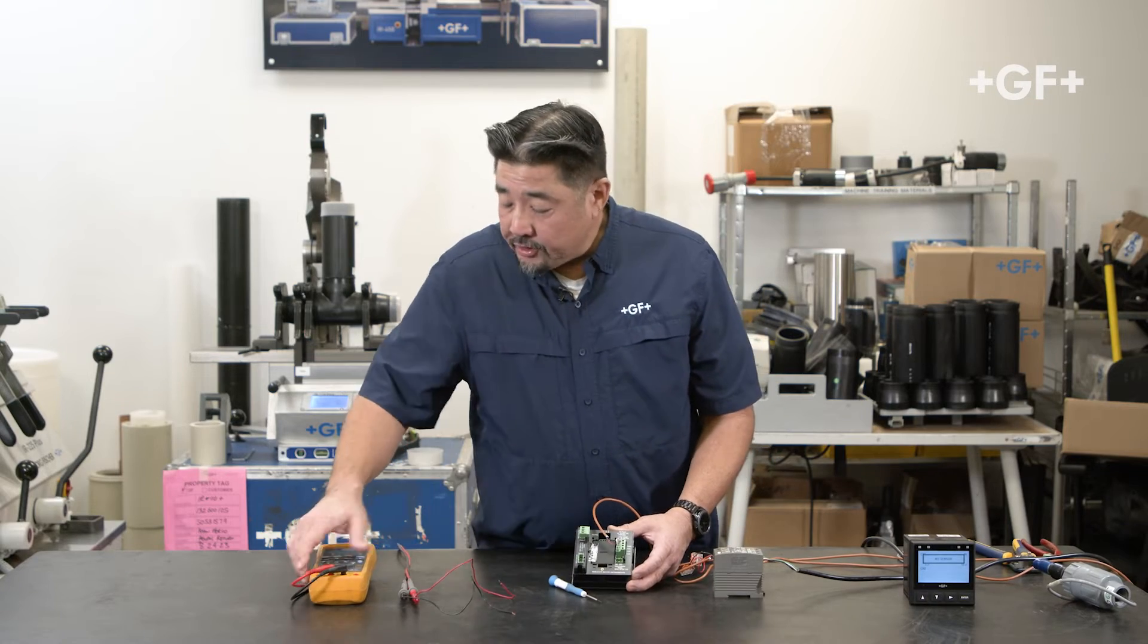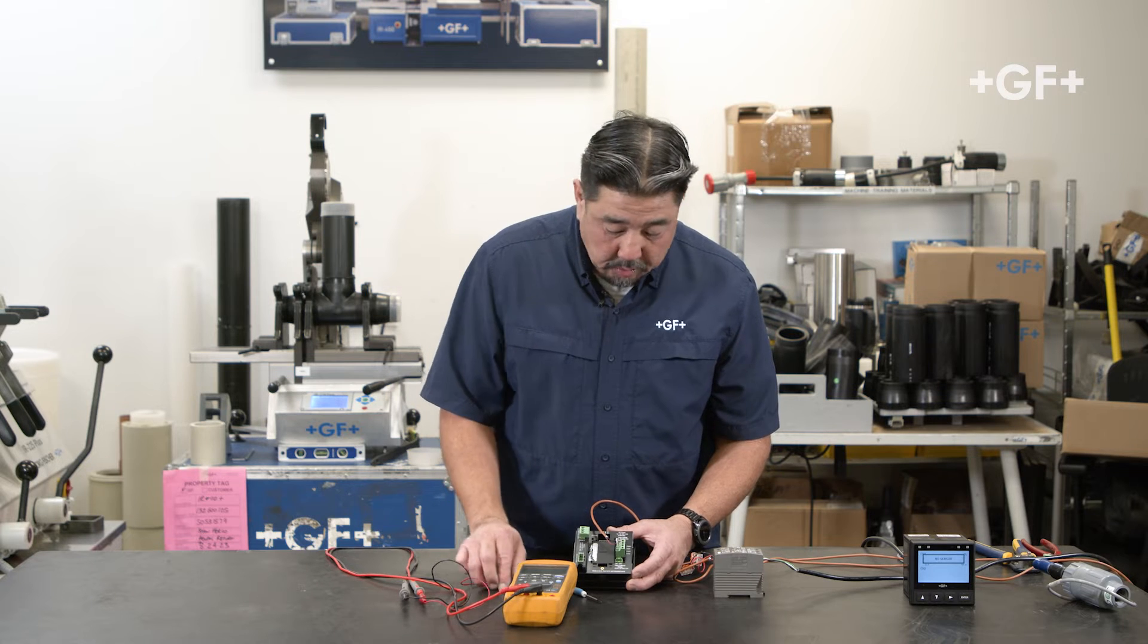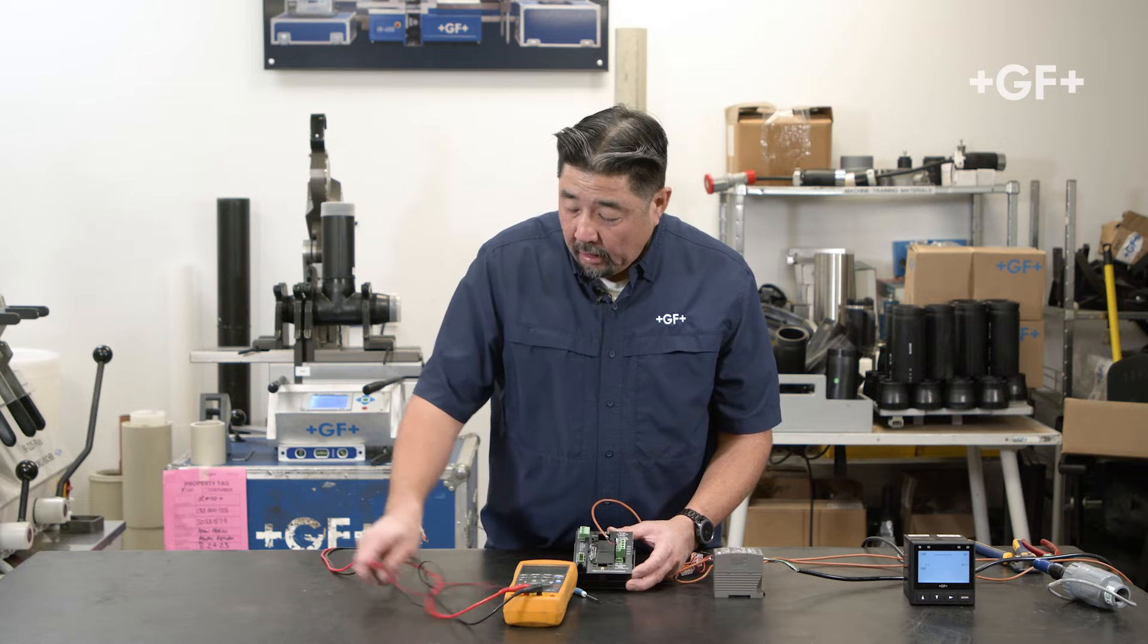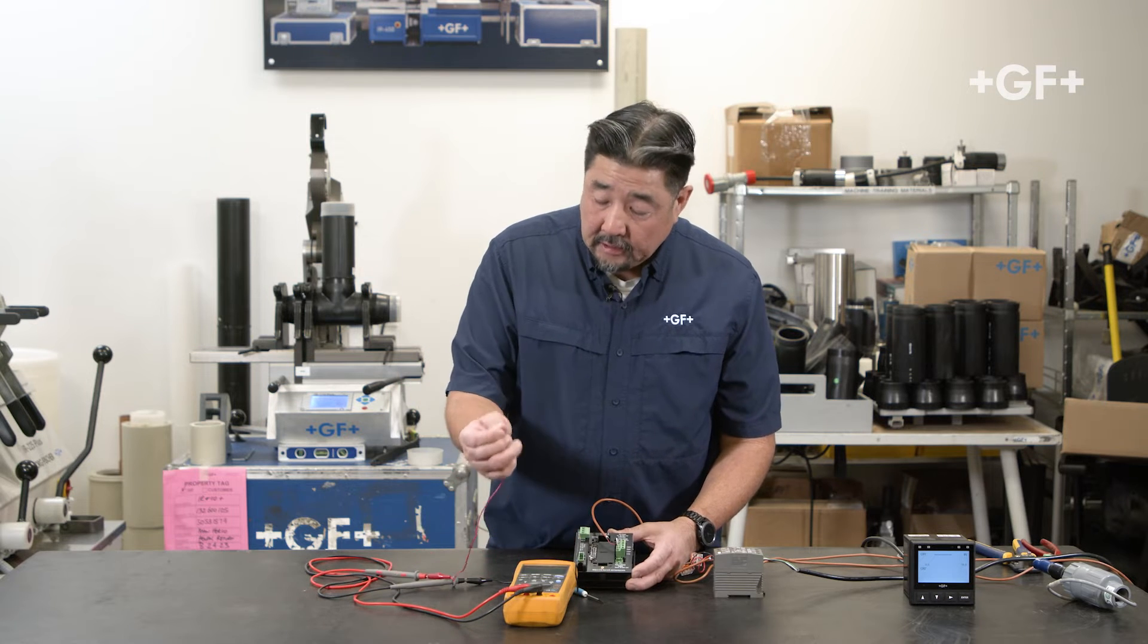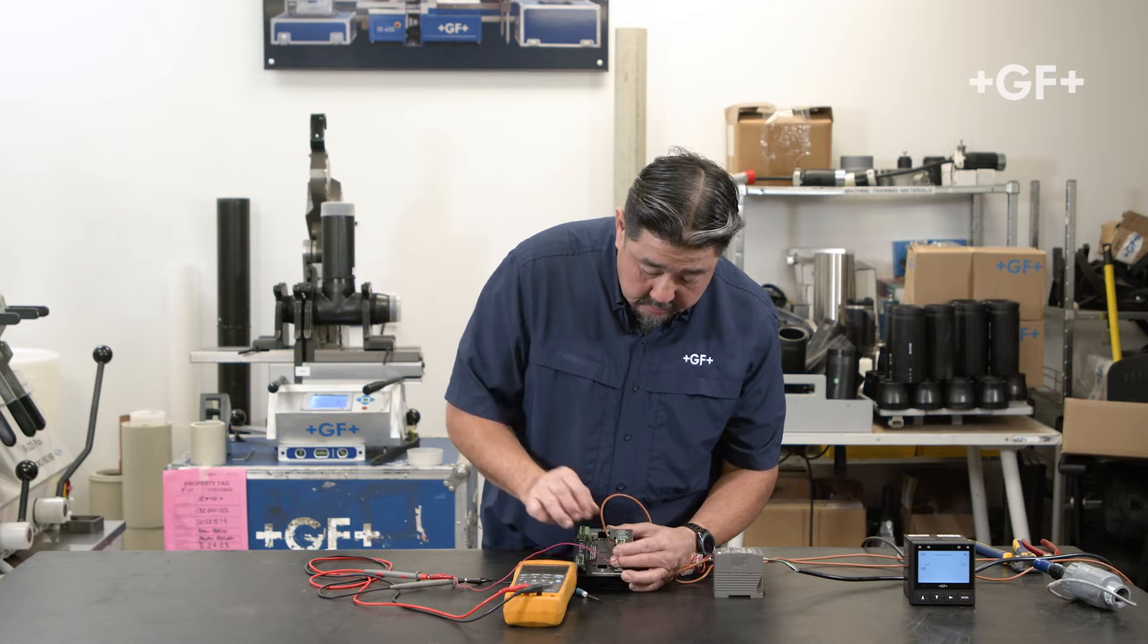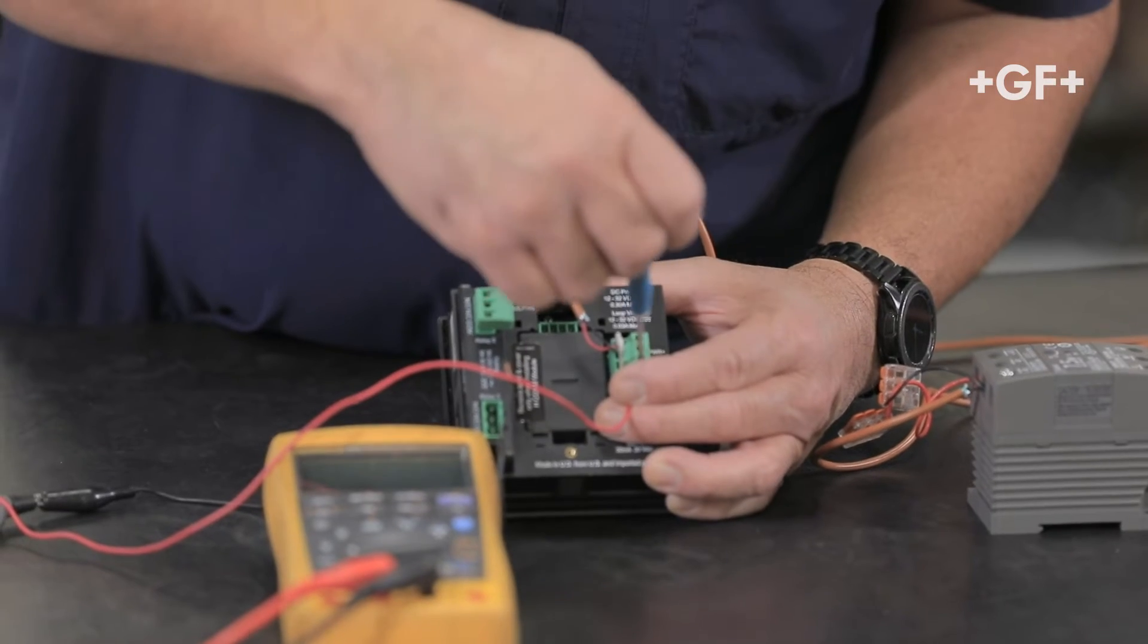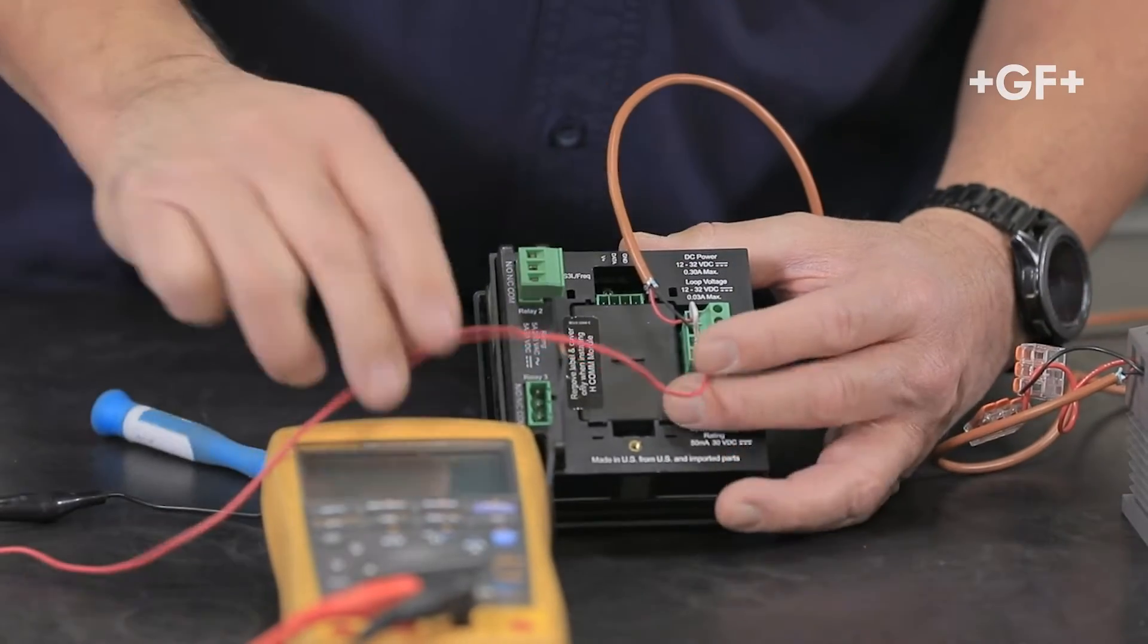And in this demonstration I'm going to use a multimeter as our 4-20 device, so this will show our analog output. What I'll do is I'll take the input lead and I'll put it into loop minus. Looks like that.